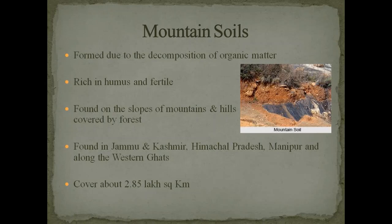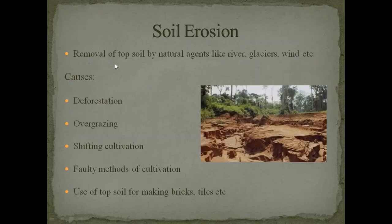We have discussed the six types of soil. Now, what is soil erosion? Soil erosion is the removal of top soil by natural agents like rivers, glaciers, winds, etc. Floods and landslides cause removal of top soil every year, resulting in the loss of fertility of the outer soil.